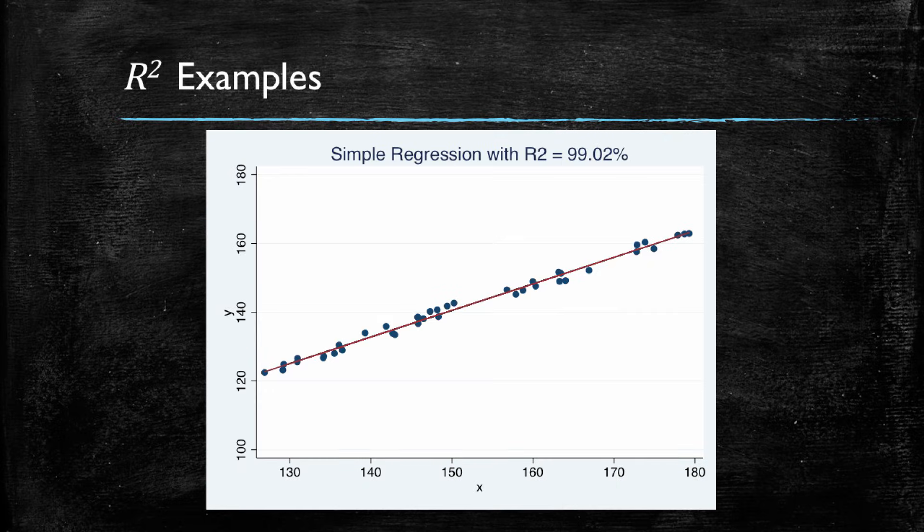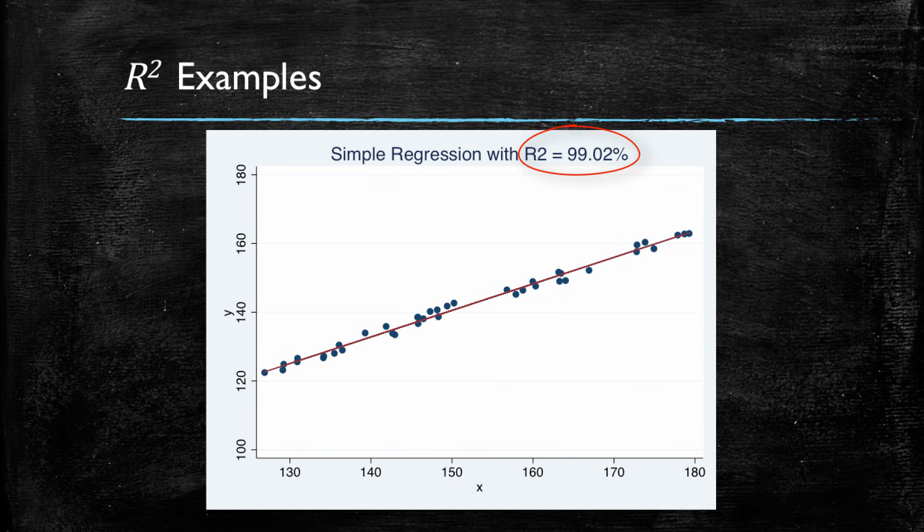I will show you a series of plots of X's and Y's of regressions with different R squareds. Here you can note that in this regression with an R squared very close to one, very close to 100%, an R squared of 99%, the observations pretty much lie over the fitted values that come out from our model.